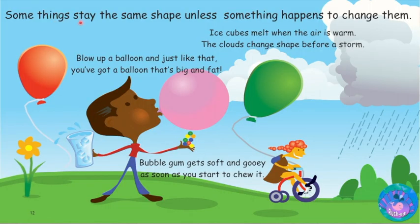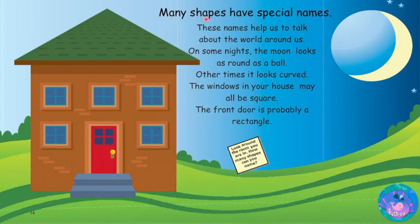Some things stay the same shape unless something happens to change them. Ice cubes melt when the air is warm. The clouds change shape before a storm. Blow up a balloon and just like that, you've got a balloon that's big and fat. Bubble gum gets soft and gooey as soon as you start to chew it.